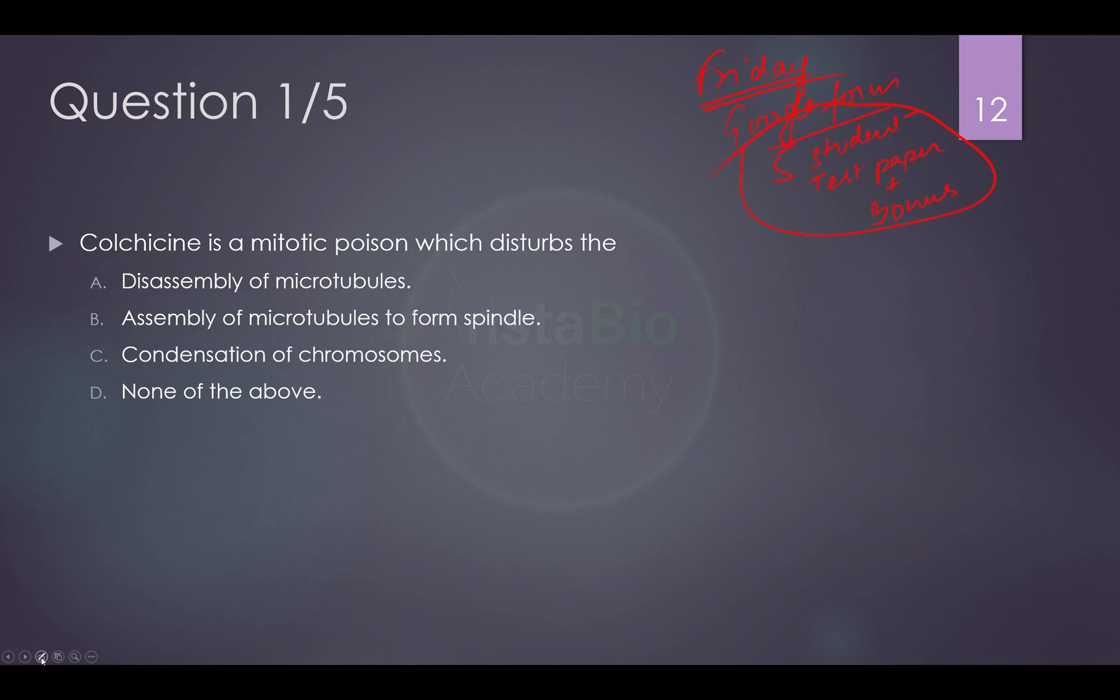So let us start with our questions. Colchicin is a mitotic poison which disturbs the... colchicin binds with microtubules and does not allow them to assemble to form a spindle, and this is why this is used in some experiments also. If you take higher classes, you will do these research experiments. So the best answer is assembly of microtubules to form spindle.